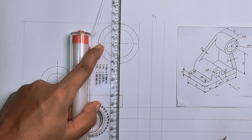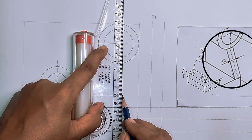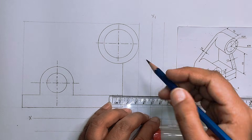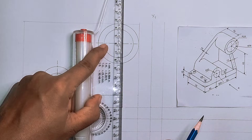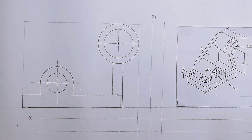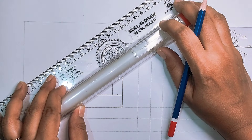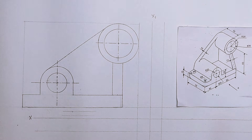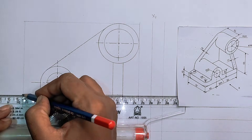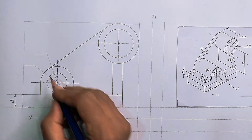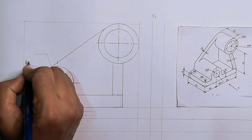Next, draw the rib. Whenever we see from the front the depth of the rib, we can't see it, so the inclined lines are converted into straight lines. Draw the straight line - the rib thickness is 12 mm. The last step is to draw the remaining rib joining the bigger cylinder and the semi cylinder. Our front view is now complete. Provide dimensions neatly and correctly, making sure you follow the standard dimensioning rules.